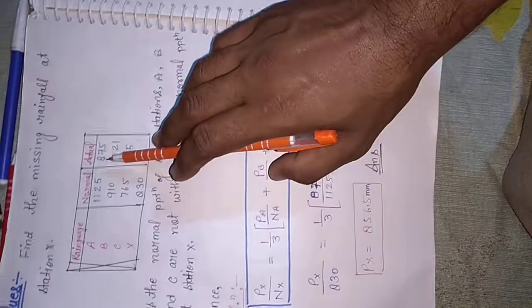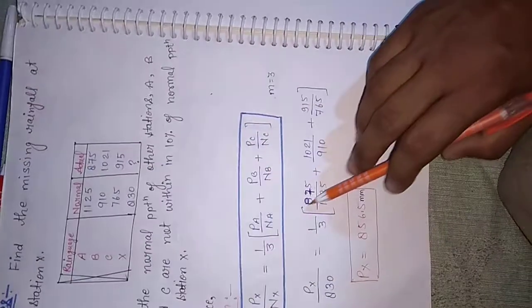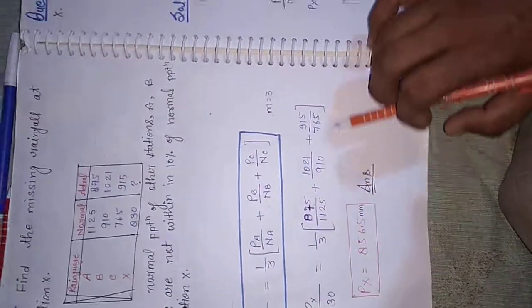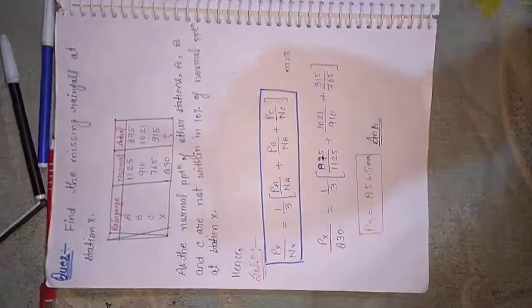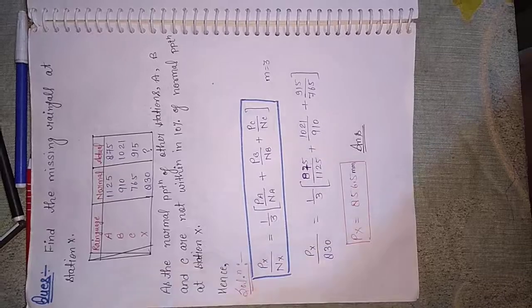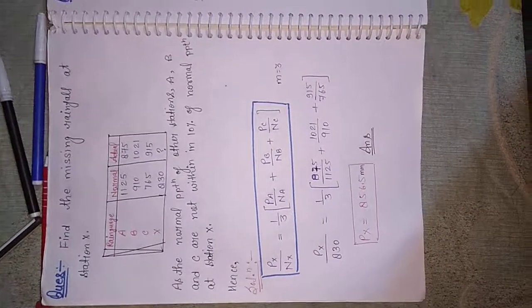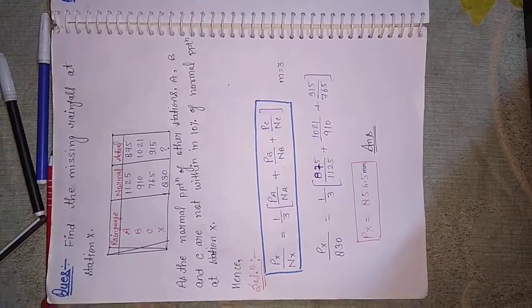Pa की value 875 और Pn की value 1125 है। सब values put करके Px की value निकाल लीजिए। दोस्तों, हम ऐसे ही videos बनाते रहेंगे — please हमारे video को like, share, subscribe करते रहें। Thank you for watching. जुड़े रहिए Educational Point के साथ।